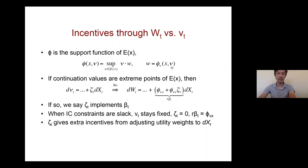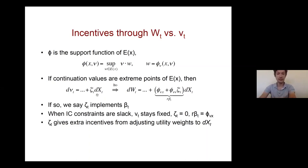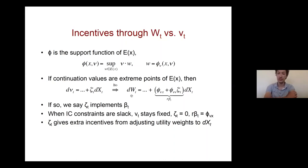The relationship between the support function and continuation utilities follows from the envelope theorem: continuation utilities are the derivatives of the support function with respect to the weights on players' utilities. This gives continuation utilities as functions of the state and direction. Using Itô's formula, if directions change with signals in a particular way, the continuation values also change with signals because they are a function of direction and state.